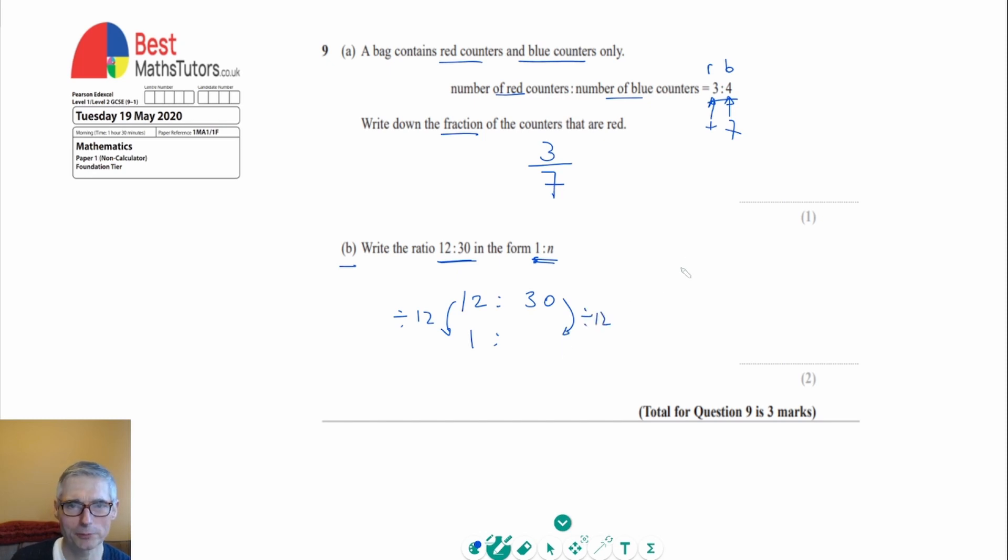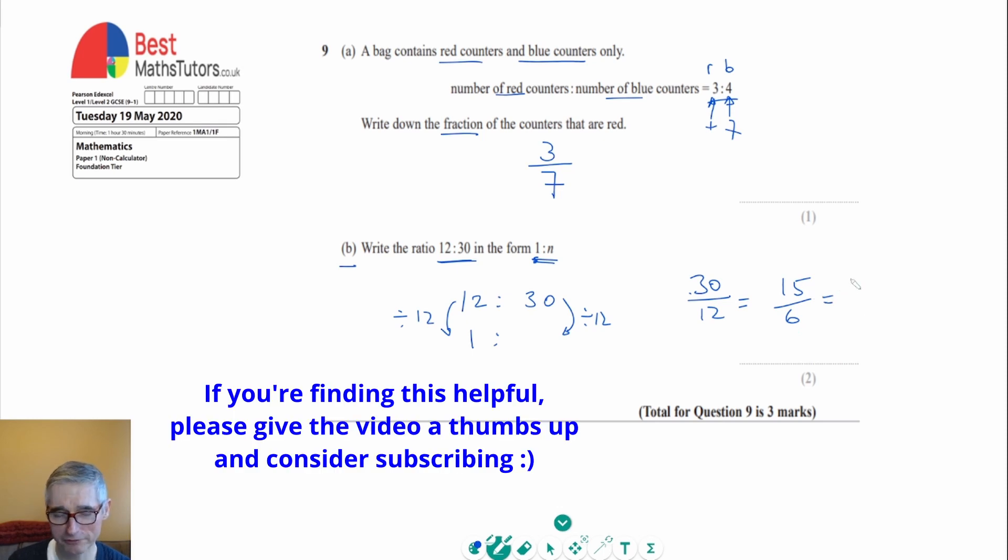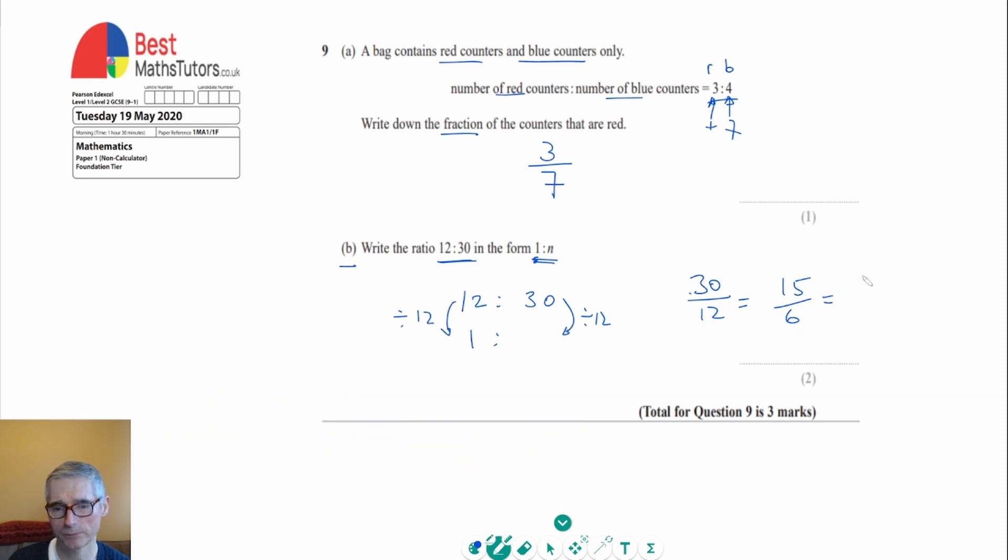It's a non-calculator paper as well, so I need to do that by division. I can make that a little bit easier for myself. I'll write it as a fraction and then try and cancel the fraction down. I could divide top and bottom by 2 first of all, and I would get 15 over 6. I can see that 15 divided by 3 gives me 5, and 6 divided by 3 gives me 2.